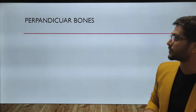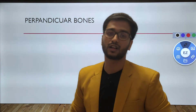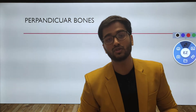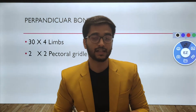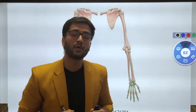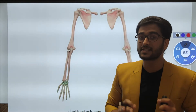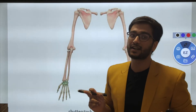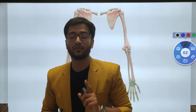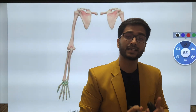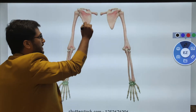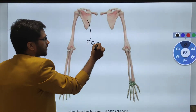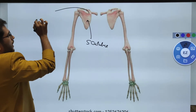The appendicular skeleton comprises 30 bones in each limb, as well as 2 pectoral girdles and 2 pelvic girdles. The upper limb comprises about 68 bones — 34 on the left side and 34 on the right side. We will study one side of 34 bones, which are the same on the other side. Among them, 2 bones are of the pectoral girdle.